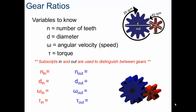Before we begin, some variables that you need to know. N stands for the number of teeth, the teeth that are interlocking together.